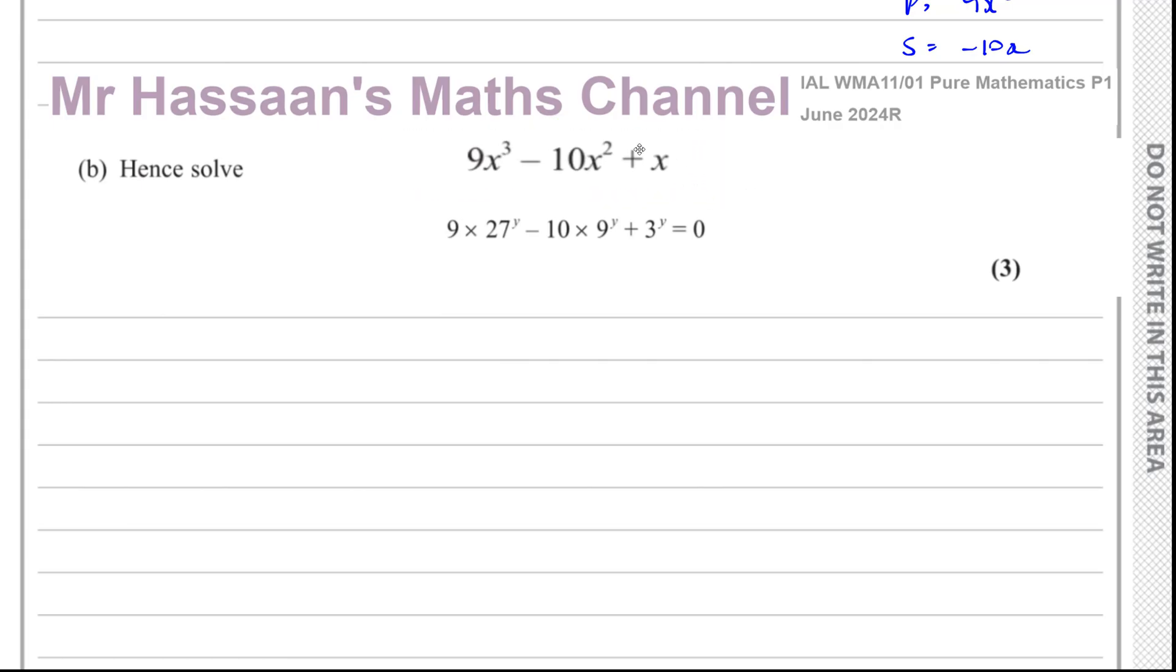So if you compare, we have 9 times something. And that's like x cubed. Minus 10 times something, which is x squared. And that's like that. Plus something. So we can see here that if we consider x to be the same as 3 to the power of y, then if you square x, you're going to get 3 to the power of y all squared, which is the same as 3 squared to the power of y, which is going to be 9 to the power of y.